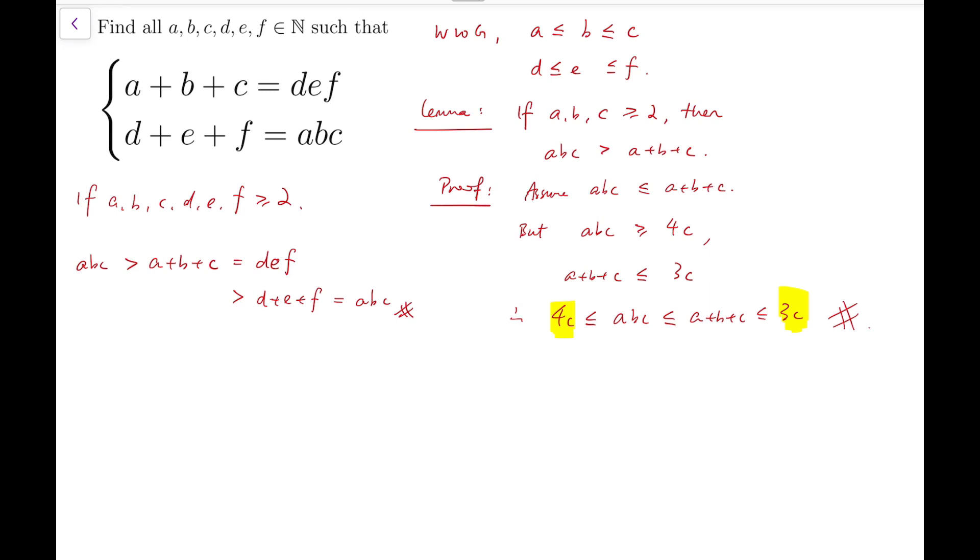So that means we must have at least one of a, b, c, d, e, f to be one. Now I'm going to assume it to be a because a is the smallest among a, b, and c. Then the system will become b plus c plus one equals def and d plus e plus f equals to bc.